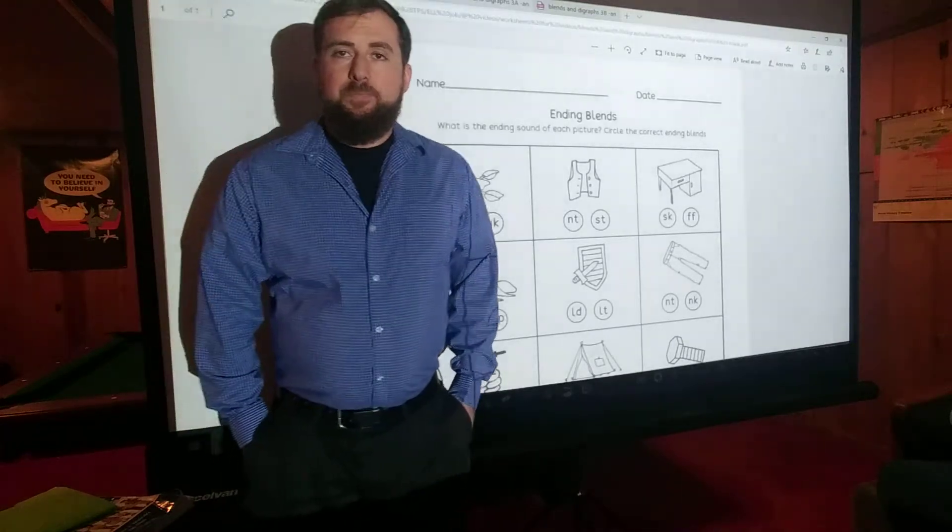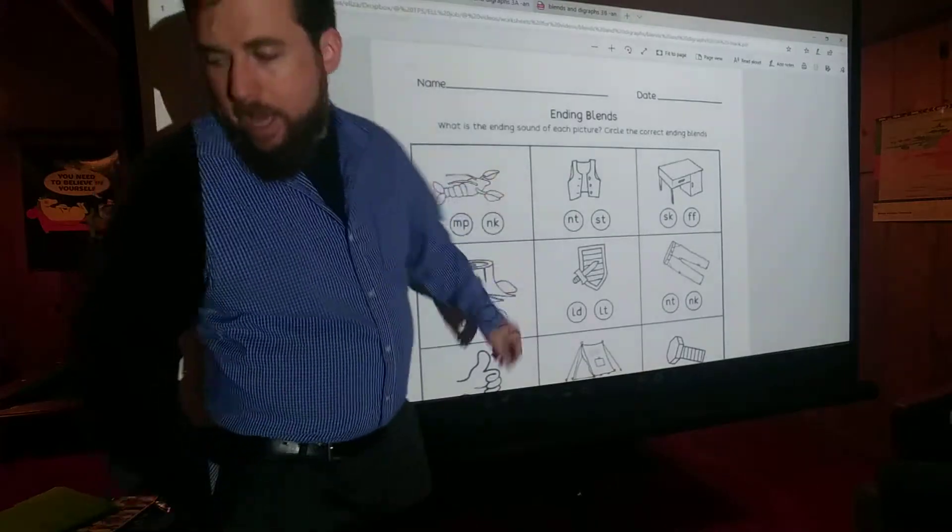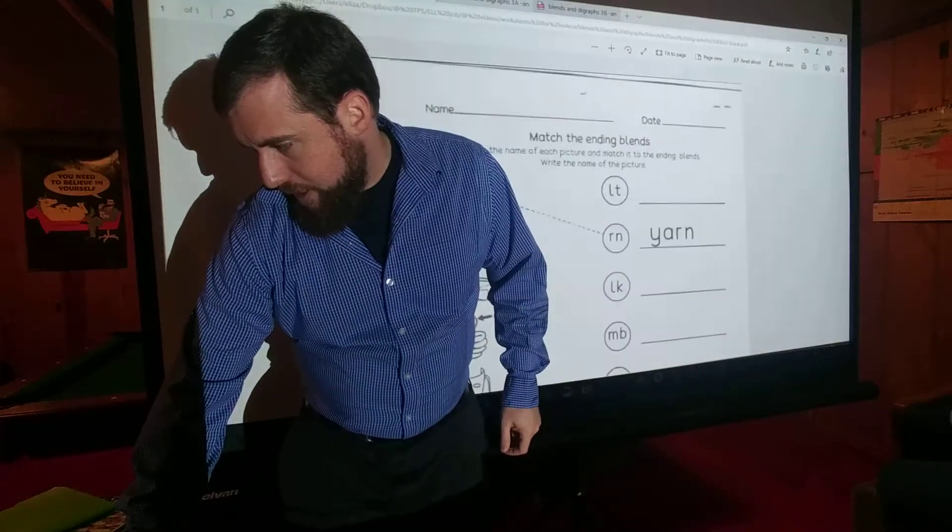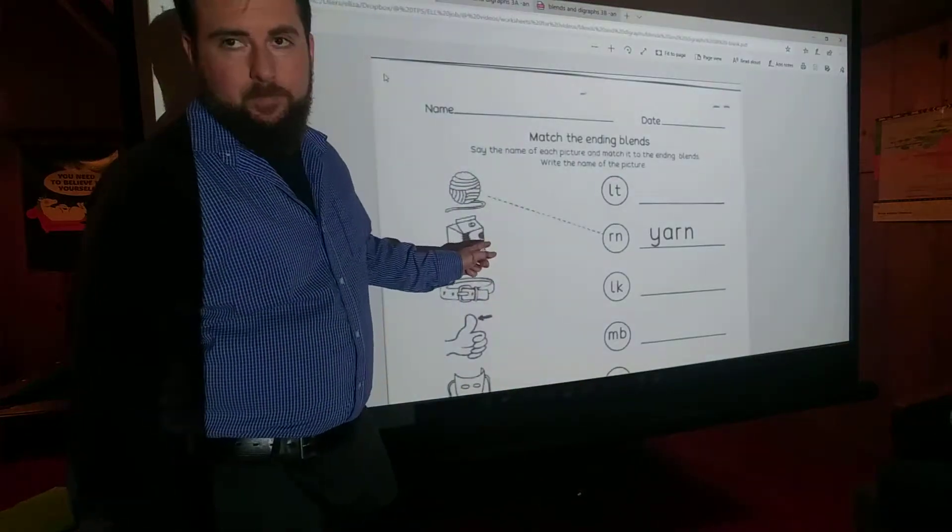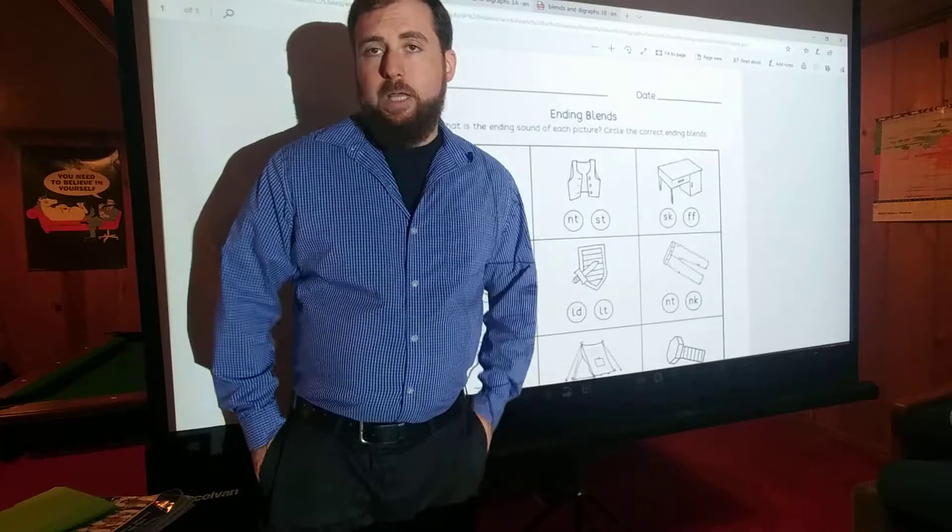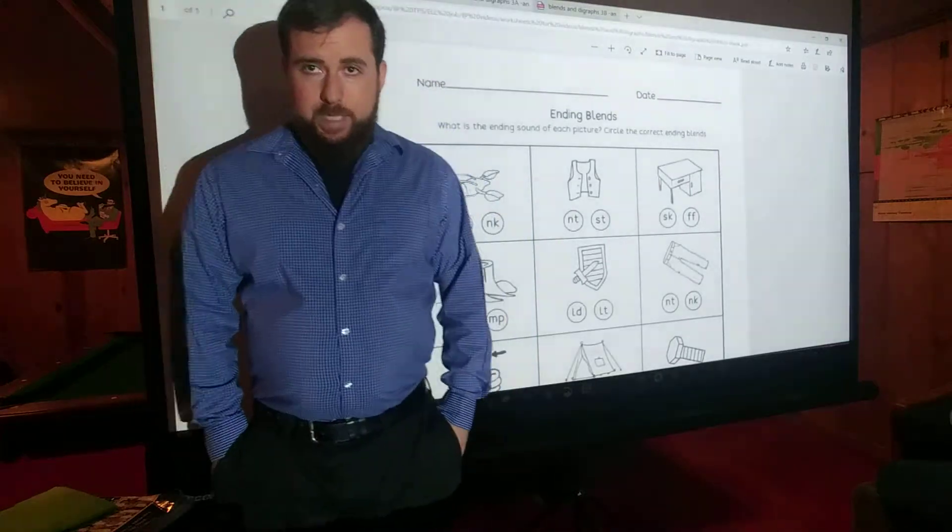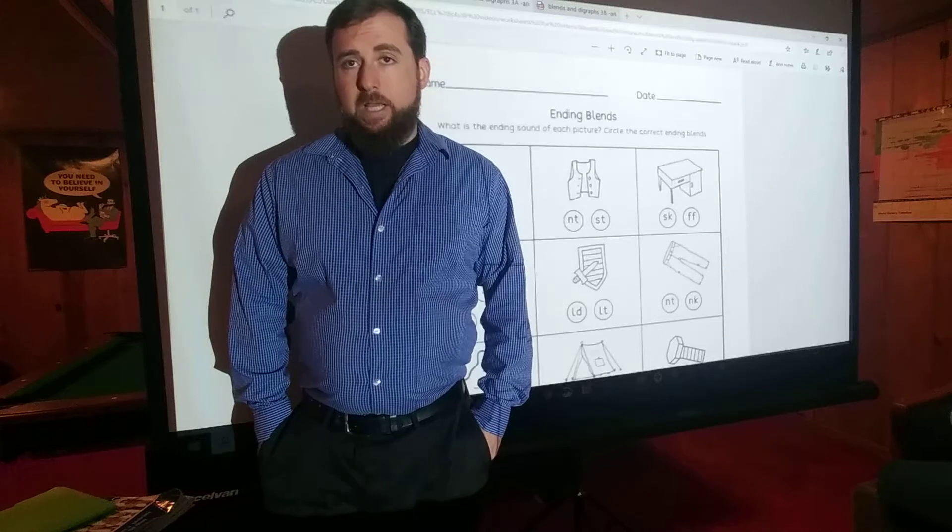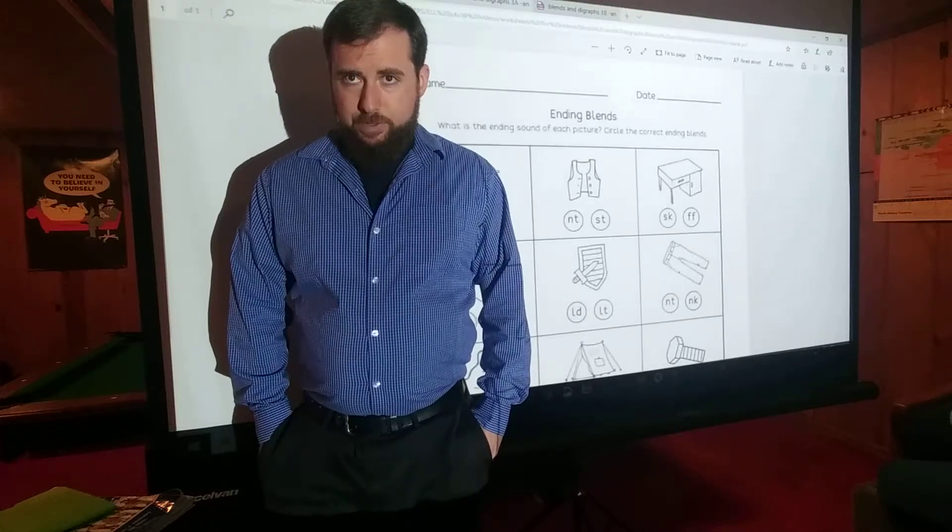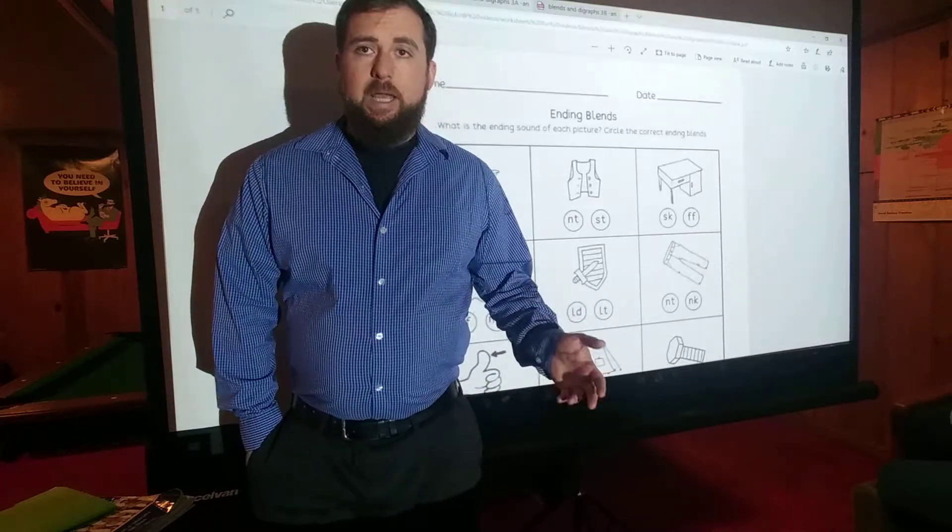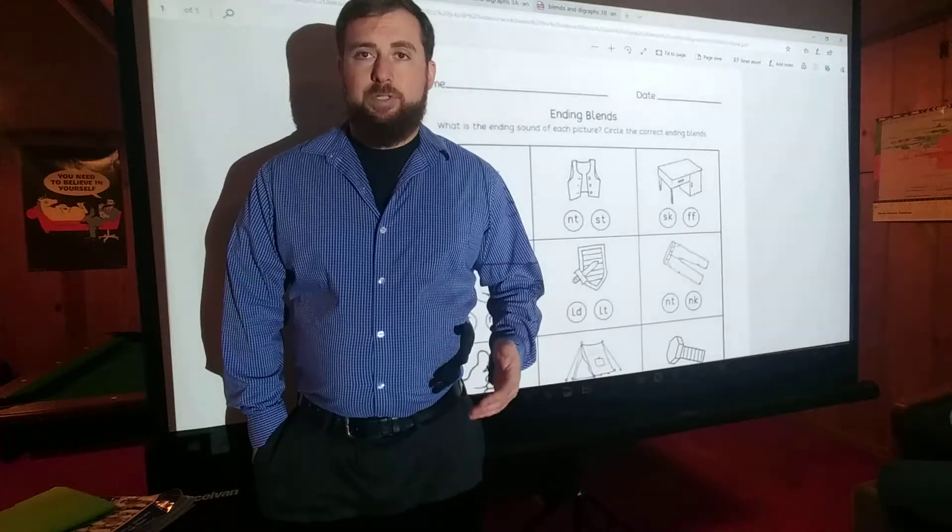To complete this lesson, you'll need activity sheet 3A and activity sheet 3B. You can find them in the description of the YouTube video. Please make sure you have them printed out and have a pen or paper ready before you begin the lesson. If you don't have access to a printer, you can still read them off of your computer and write the answers on a separate sheet of paper.